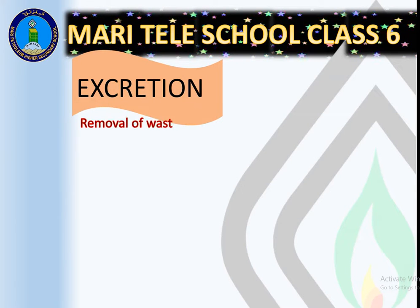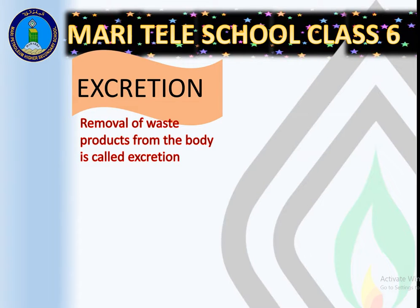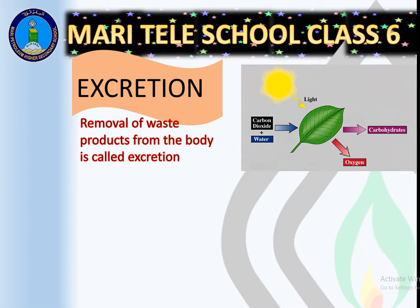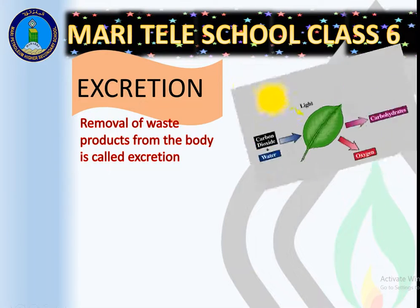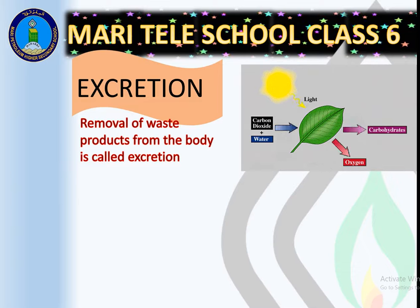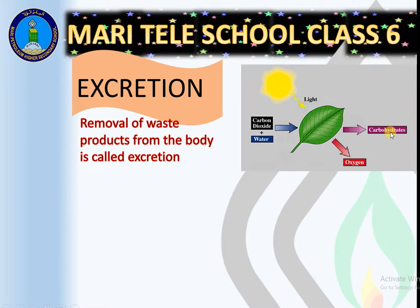After growth we have excretion. Excretion is the removal of waste products from the body. In the case of plants, the process of photosynthesis is shown — sunlight falls on the leaf, carbon dioxide and water come in, and in the presence of chlorophyll, plants prepare food in the form of carbohydrates and glucose. The waste product released is oxygen.